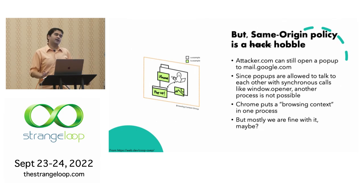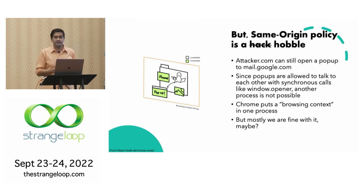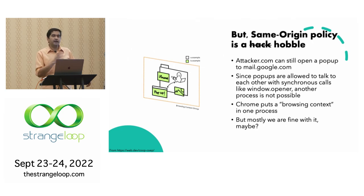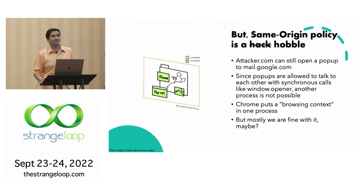But remember, same origin policy is a hack. Doing all of this still doesn't make us fully secure because attacker.com can still open a pop-up to mail.google.com. Because iframes and pop-ups can talk to each other through synchronous communication mechanisms, the browser cannot put each of them in a separate process. Currently in Chrome, the iframe, the pop-up, different websites — are all together in the single process, called a browsing context. For years the assumption was: yes, this is a really annoying attack, but no one will do it, so maybe we are fine.